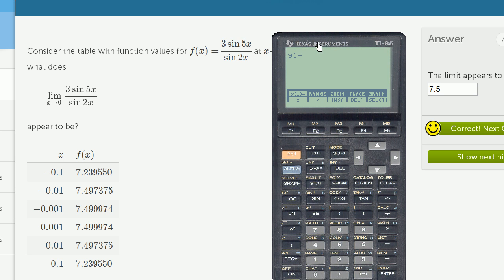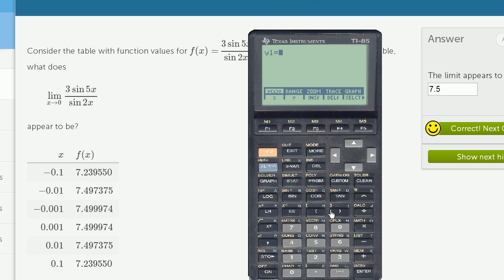But just to visualize what that looks like, let's get our graphing calculator. I have the graph just to show you how I get here. If I start on the home screen, press graph, define my function of x as 3 sin(5x) divided by sin(2x).